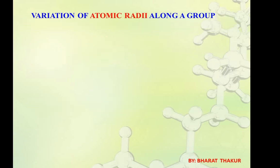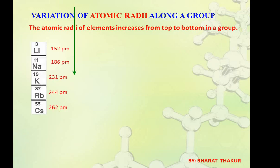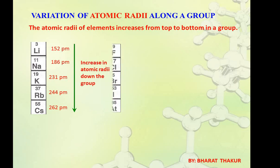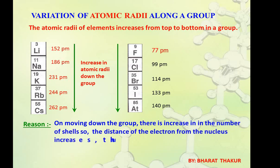The variation of atomic radii along the group: atomic radii of elements increase from top to bottom in a group. For example, Lithium has atomic radius 152 pm while Cesium has 262 pm. Similarly from Fluorine to Astatine, atomic size increases — Fluorine is 77 pm and Astatine is 140 pm. The reason: on moving down the group, atomic size increases because the number of shells increases, so the distance of electrons from the nucleus increases.